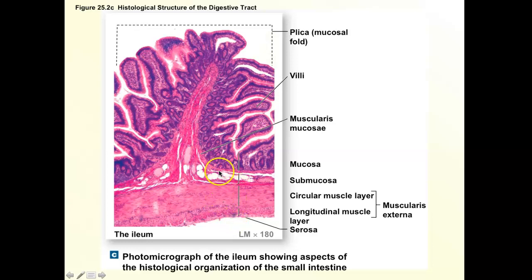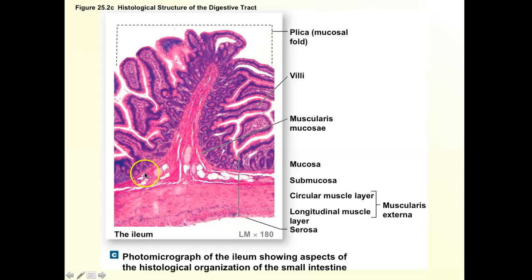The muscularis mucosa is smooth muscle — this is typical smooth muscle tissue. You can see that line hugging the bottom of the mucosa layer, and that light pink band is that smooth muscle. Inside the submucosa there's nothing specific to recognize — just recognize the layer itself. Then you want to recognize the muscularis externa.